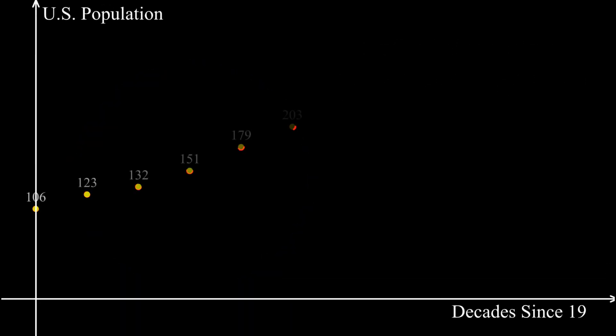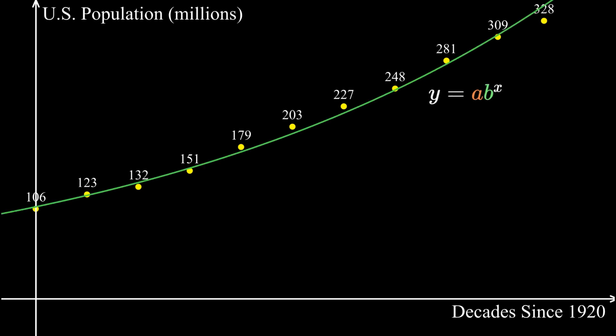For example, given the population of the United States, we can find the exponential function that best fits all of these points by turning the problem into a linear regression problem with parameters given by the logarithm of a and the logarithm of b.